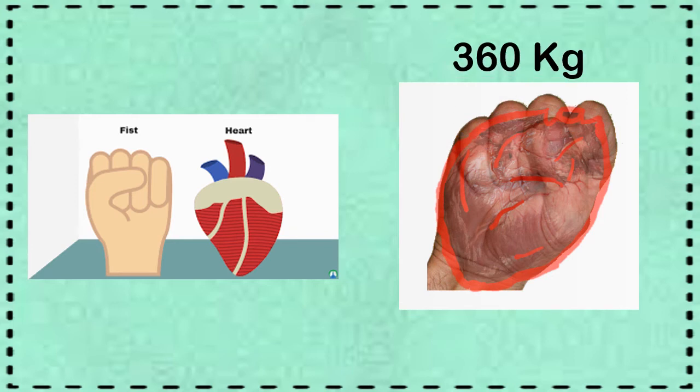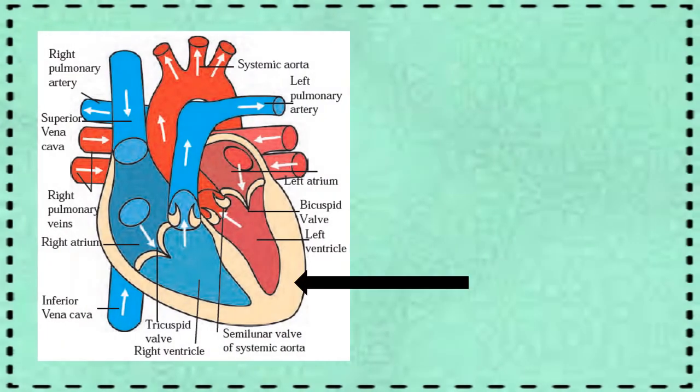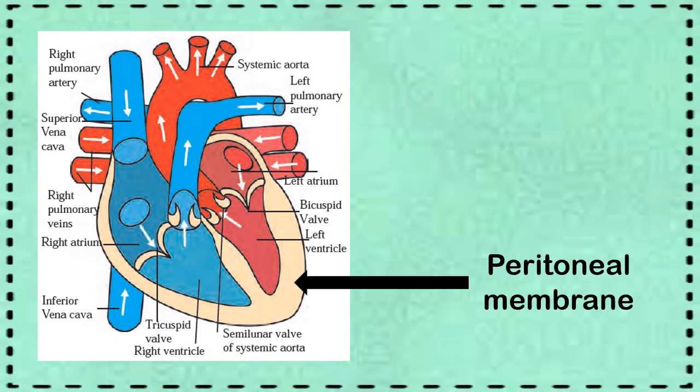The heart is covered by a double-layered pericardial membrane. A fluid is present between the two membranes, due to which the heart is protected from friction and mechanical shocks. This means whenever we get a jerk, the heart is protected because of this pericardial membrane.